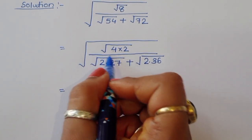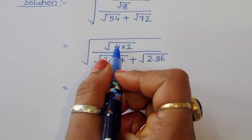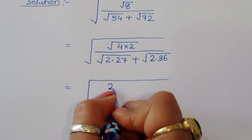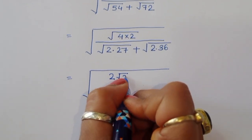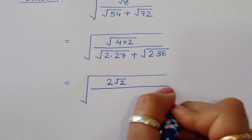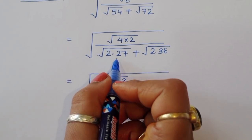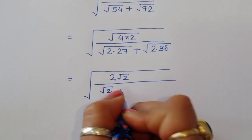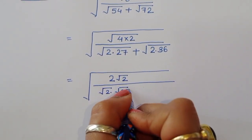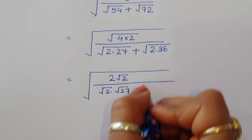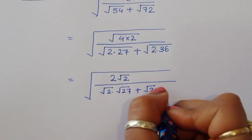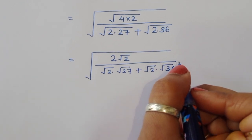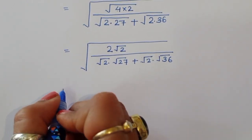Square root of 4 equals 2, so the numerator becomes 2 times square root of 2. In the denominator, we separate terms: square root of 2 times square root of 27 plus square root of 2 times square root of 36.